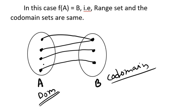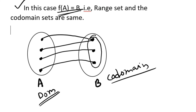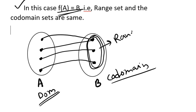That is, here f of A is equal to B. The collection of all the images of the domain set is known as the range set. Here, in this case, the range set and the codomain set are both equal. So, for an onto function, the range set and codomain set should be the same.